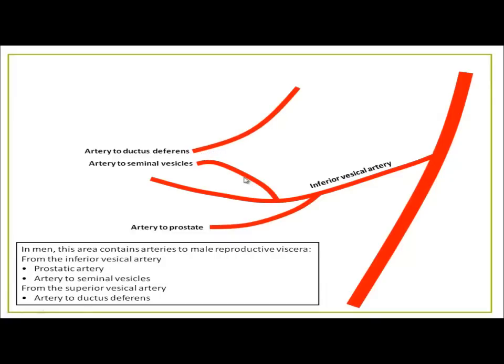It has a branch that goes down and supplies the vas deferens, also known as the ductus deferens. So think of the three male genital organs, and you've got the prostate, the seminal vesicles, the ductus deferens. The lower two are coming off the inferior vesicle artery. The more superior of the bunch is coming off the superior vesicle artery.